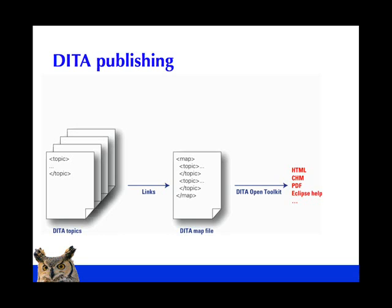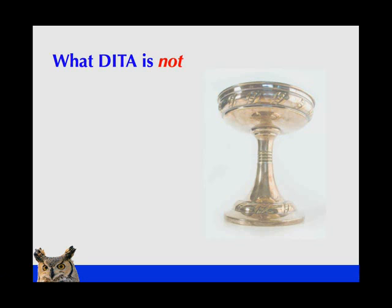So the map file is the roadmap, if you will, that tells the DITA Open Toolkit: I want you to output this stuff in this sequence, in this order, in this setup.